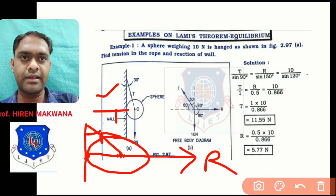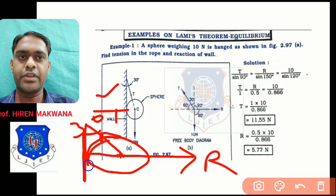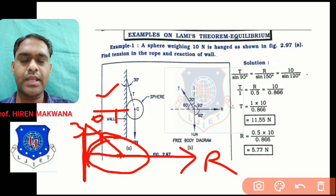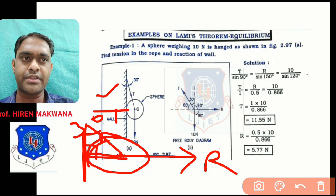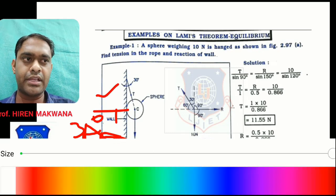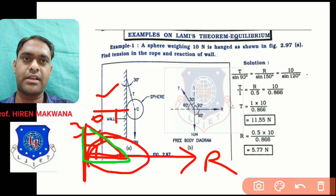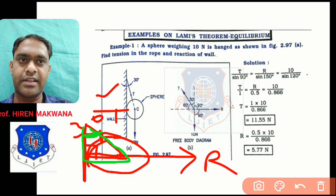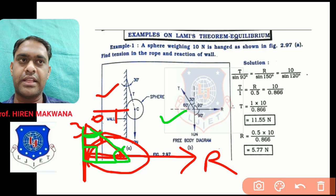This angle is 30 degrees. The wall and sphere are tangent, so the tangent and radius make 90 degrees always. This forms a right angle triangle — this angle is 30, this angle is 90, so the remaining angle is 60. So the angle between reaction and tension on the left side is 60 degrees.